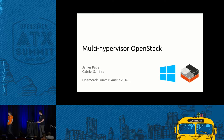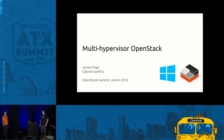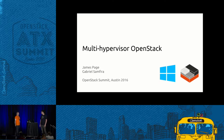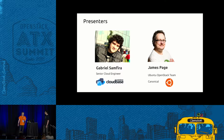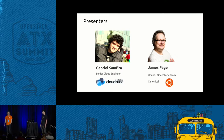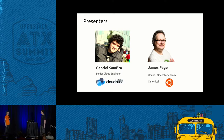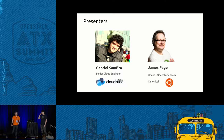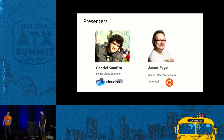Welcome to our multi-hypervisor OpenStack session. We'll do a quick intro, then get into the main content. My name is James Page. I'm technical architect of the OpenStack engineering team at Canonical. I've been working in open source for about the last 15 years, primarily as an end user for the first 10, and then the last six at Canonical working on Ubuntu and OpenStack.